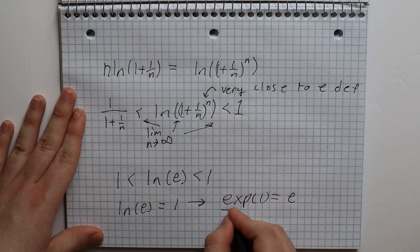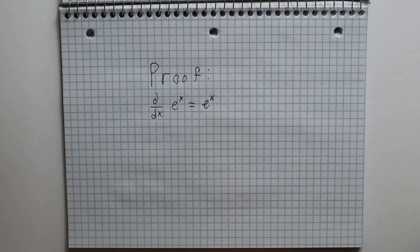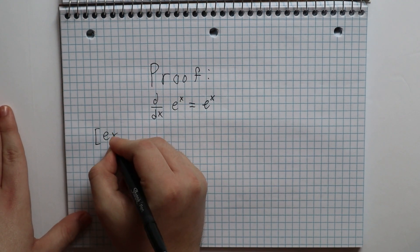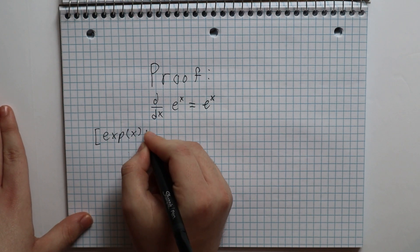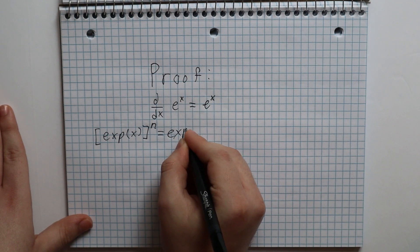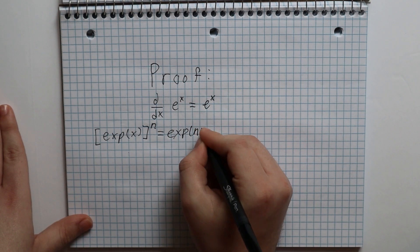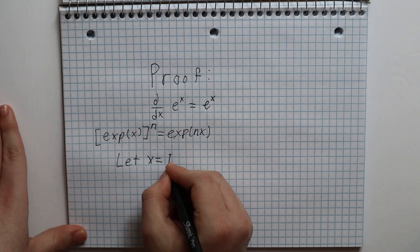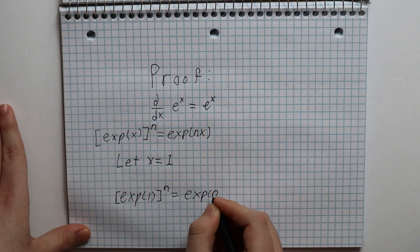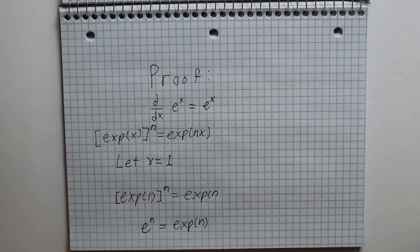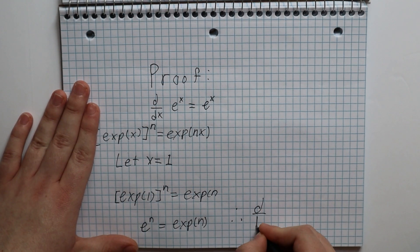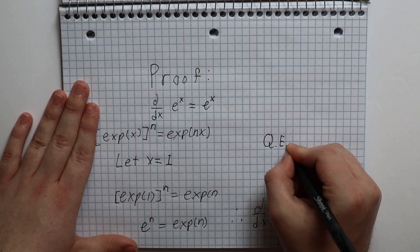You can almost taste the proof, it's so close. Here is the proof: remember the equation exponential(n times x) equals exponential(x) to the power of n. Setting x equal to 1, we get exponential of n equals exponential(1) to the power of n. Since exponential of 1 is equal to e, we get exponential of n equals e to the n. And since the exponential function is its own derivative, then e to the x is its own derivative. Thus concludes our proof.